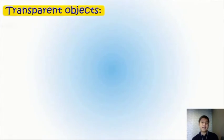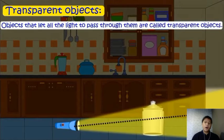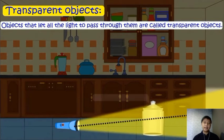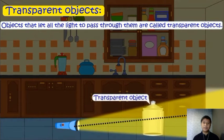We have different kinds of objects. We have transparent objects. Objects that let all the light pass through them are transparent objects. For example, we have glass.